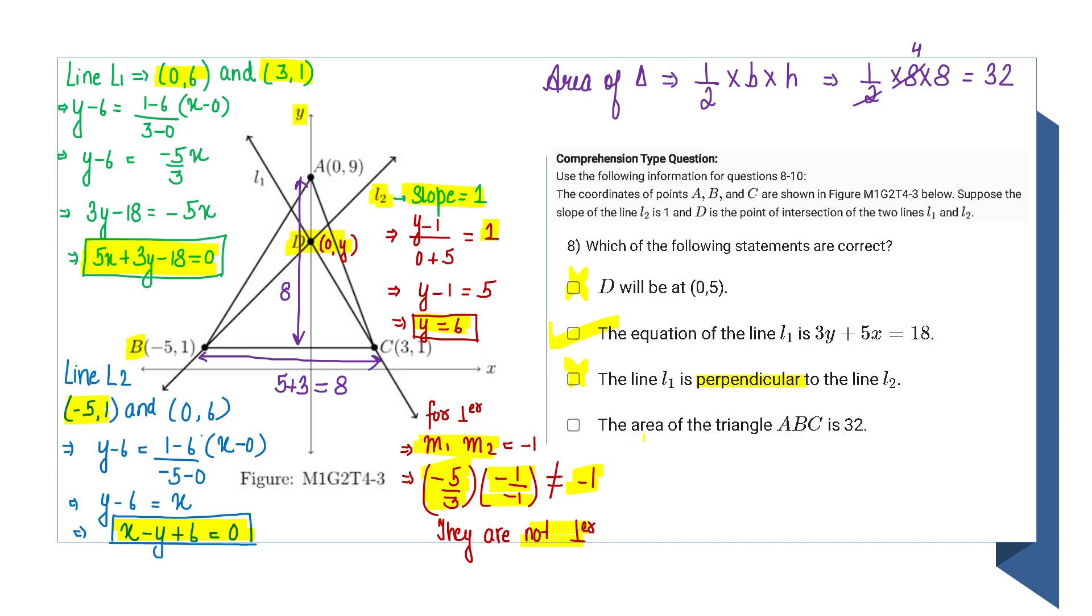Now in the last option, I need to calculate the area of the triangle. I can use Heron's formula since we know the coordinates of all three points, or use half into base into height. For this, I won't have to calculate base and height separately.